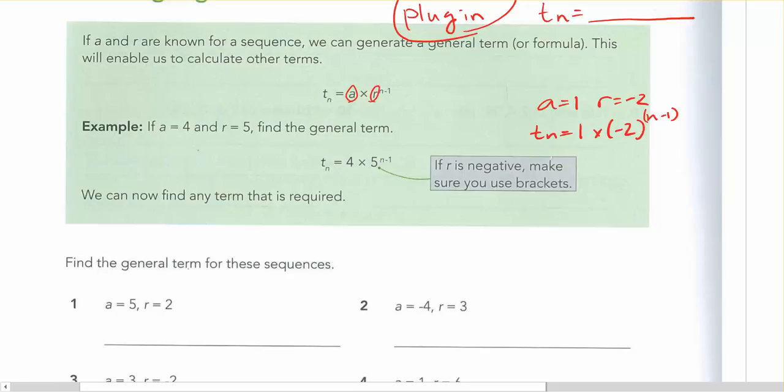We're basically just replacing a and r. So for the first formula here, tn equals a is 5 times r is 2 to the power of n minus 1, and we're done.